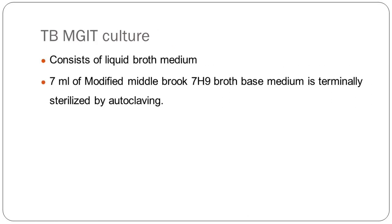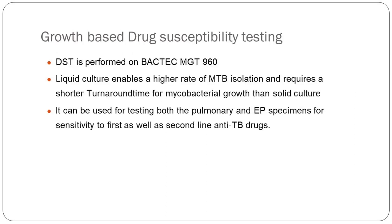You have the TB MGIT culture. Earlier we used LJ medium — six-week solid culture. Now we have a liquid culture. You can do DST on MGIT. The algorithm covers rifampicin, INH, pyrazinamide, moxifloxacin, levofloxacin, amikacin, kanamycin, capreomycin, clofazimine, bedaquiline, delamanid. For ethambutol and ethionamide the DST may still be inaccurate. For cycloserine and meropenem we still don't have DSTs available.